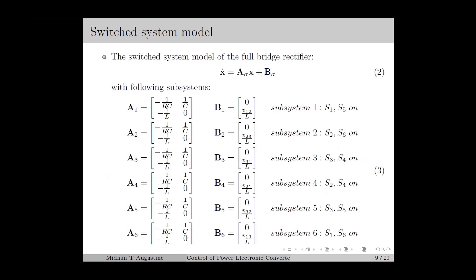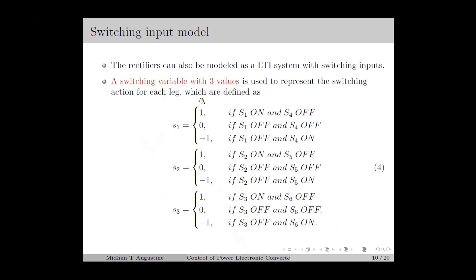By considering all possible switch configurations, we can obtain the switched system model of the rectifier as in equation number 2. This shows the subsystems and the corresponding switching configurations. The A matrix is the same for all subsystems and only the B matrix changes — it changes with the equivalent input voltage. Similar to the DC to DC converters, the rectifiers can also be modeled as an LTA system with switching inputs. In rectifiers, we also have the possibility of both switches in a leg being off at a time. Therefore, a switching variable with three values is used to represent the switching action for each leg, which are defined as in equation number 4.